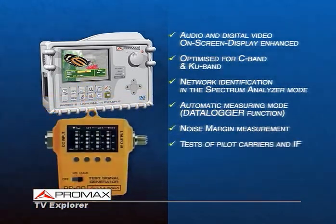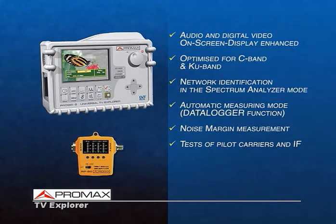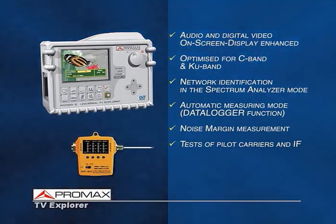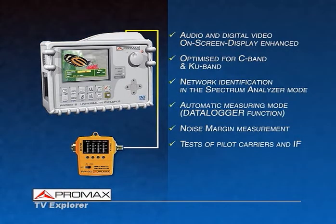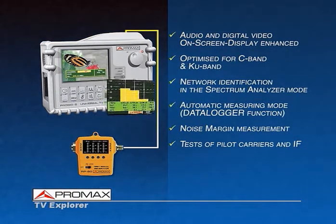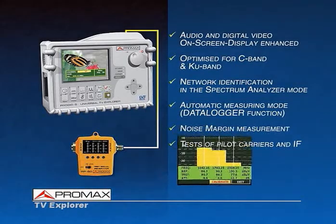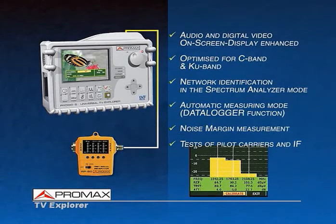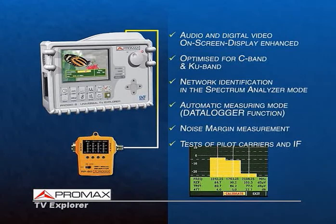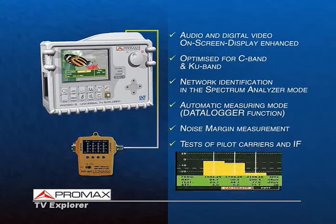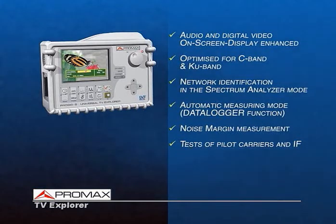The signal distribution test: connecting a pilot signal generator like the Promax RP-80 to the installation headend, the TV Explorer will measure the attenuation for each TV outlet. The RP-80 has been specially designed to be used in combination with the TV Explorer.